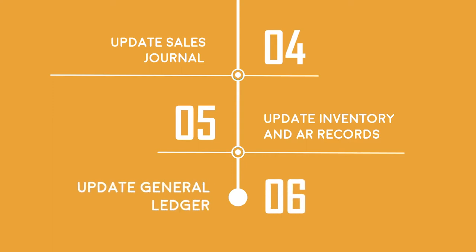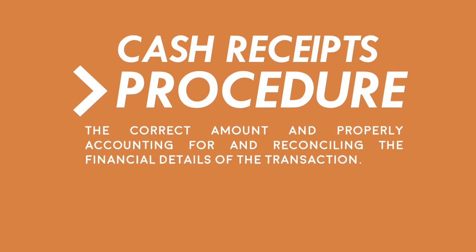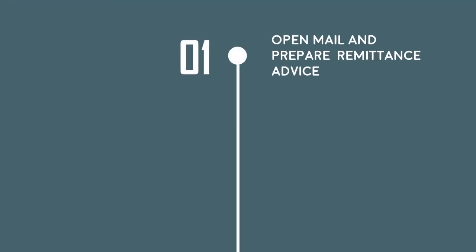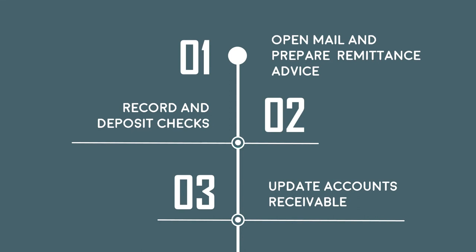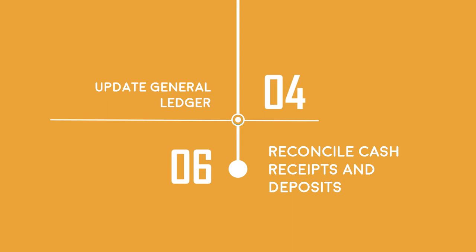And updating the general ledger. Cash receipt procedures involves receiving and securing the cash, depositing in a bank, matching the payment with the customer, adjusting the correct amount, and properly accounting for and reconciling the financial details of the transaction. It has five steps, namely: opening the mail and preparing the remittance advice, recording and depositing the checks, updating the accounts receivable, updating the general ledger, and reconciling cash receipts and deposits.